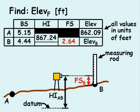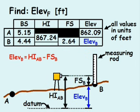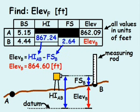And the elevation at point B equals the vertical distance from the datum to point B, which equals the height of the instrument minus the foresight reading. After plugging in the known values, the elevation at point B equals 864.60 feet.